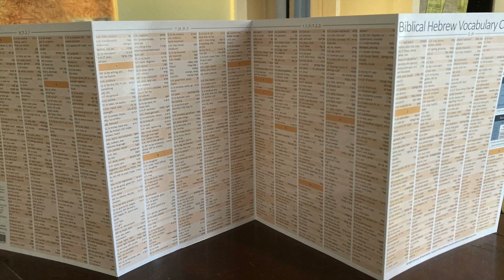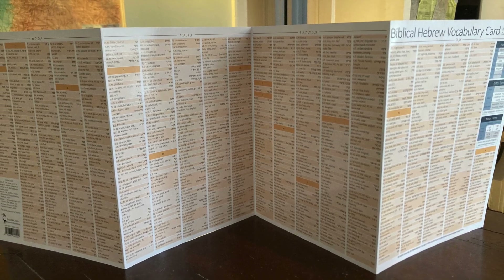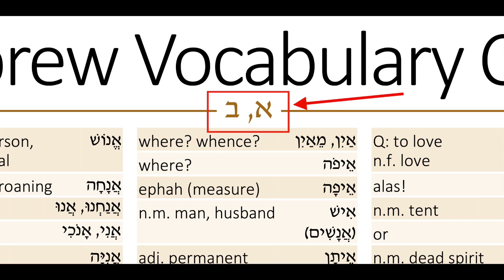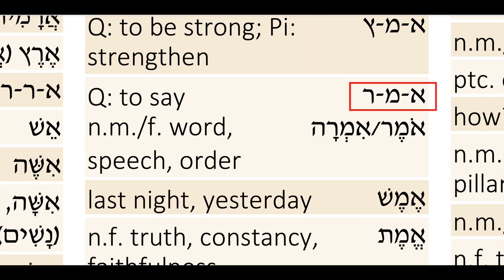The words appear in alphabetical order and are grouped according to their root. On the very first page, which has the Aleph and Bet letters, we can see that there's an entry for Amar. These letters are separated by hyphens, and what that means is that this is a Hebrew root.